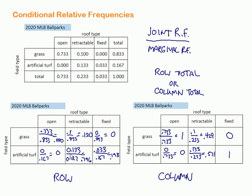Then this one, in the retractable stadiums, 79.6% of the artificial turf, so it's of this number right over here, and then 19.8% are, of the artificial turf, is in the fixed stadium.